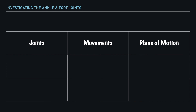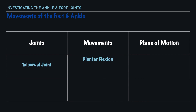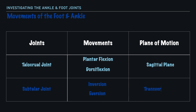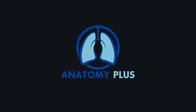So collectively, here are the movements of the foot and ankle. Specific to the talocrural joint, we have the movements of plantarflexion and dorsiflexion, which occur in the sagittal plane. And for the subtalar joint, we have both inversion and eversion, which are rotational movements and they occur in the transverse plane. Thank you for watching this video. I hope it's been helpful, and if you have any questions please let me know in the comments section below, and I'll look forward to connecting with you again in the next video.